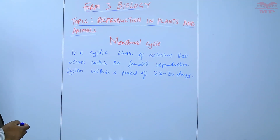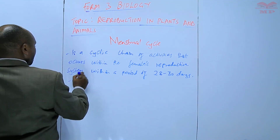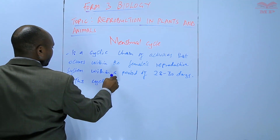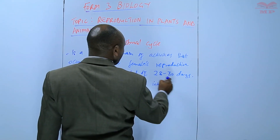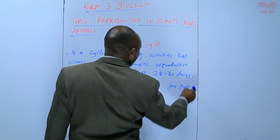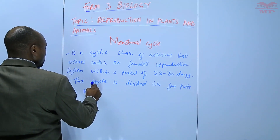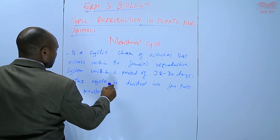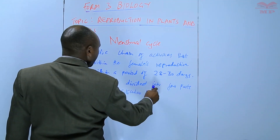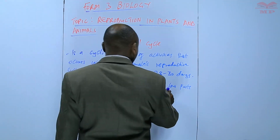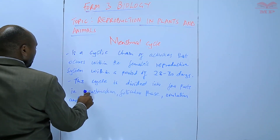This cycle is divided into four parts: menstruation, follicular phase, ovulation, and luteal phase.